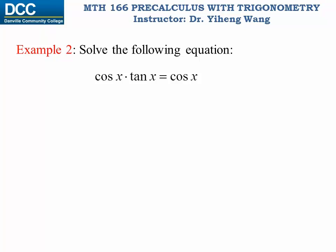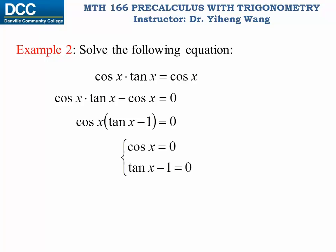The correct way to start is to move cosine x from the right-hand side to the left-hand side and factorize. We can pull out the common factor cosine x, left with tangent x minus one, and that equals to zero. From here we can write two simpler equations: cosine x equals to zero, and tangent x equals to one. This system of two simpler equations is equivalent to our original equation, and we're going to solve these two equations individually and eventually combine the solutions.